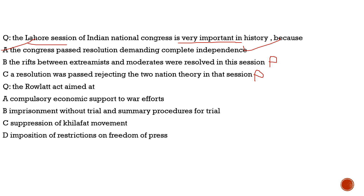The last question of today's discussion: the Rowlatt Act aimed at — Option A: compulsory economic support to war efforts — no. Option C: suppression of the Khilafat movement — no. Option D: imposition of restrictions on freedom of the press — totally incorrect. Option B: imprisonment without trial and summary procedures for trial — 100% correct. The correct answer is option B.